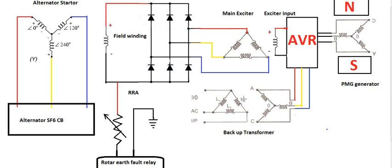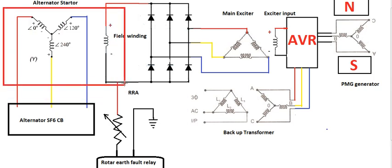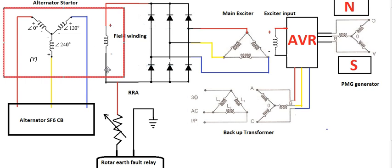This is the main field. This is the main alternator — this is the stator. This is the rotor field winding. This is the RR — the Rotating Rectifier Assembly.